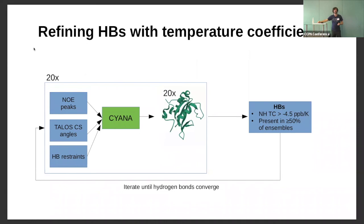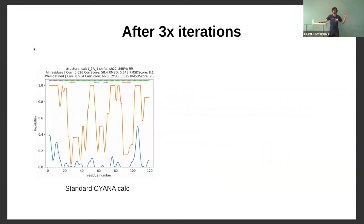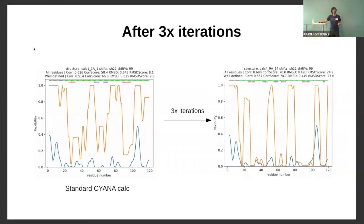I don't think this is the best way of doing it, but it's a proof of principle. Before, our best scoring model showed everything way too floppy. After three iterations of adding about 19 hydrogen bonds, we get output where some regions are now starting to become rigidified in a way that agrees with the flexibility predicted by chemical shifts, and the whole thing has become more rigid. However, there are still regions which are too floppy, probably because we haven't incorporated hydrogen bonds in those regions.